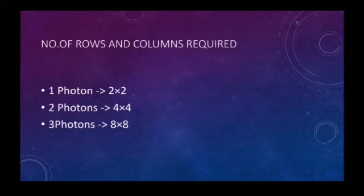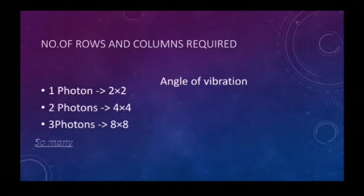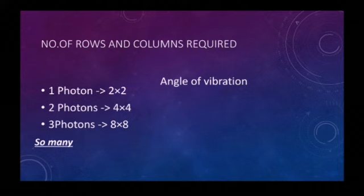The numbers in the matrix represent the angle of vibration, which corresponds to the direction of travel. Now obviously a beam of light does not contain 1 to 3 photons, but there are so many of them, and literally we require a matrix with infinitely many rows and columns to describe the beam, as we can see that the number of rows and columns increase with the powers of 2 with the addition of a single photon.